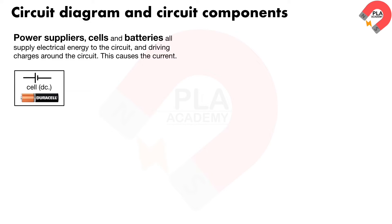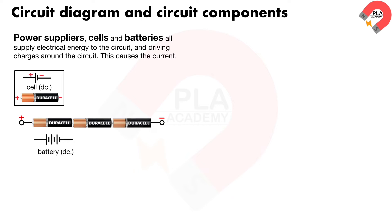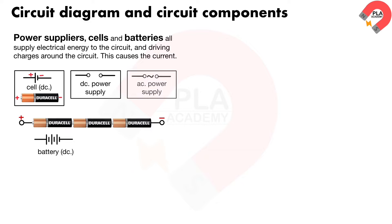This is the symbol of a dry cell, which gives a directed current. The longer side is positive and the shorter side is negative. This is the symbol of a battery, which consists of two or more cells, and it gives a directed current. This is the symbol of a general directed current power supply. This is the symbol of a general alternating current power supply.